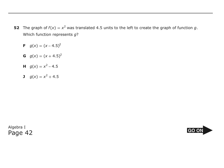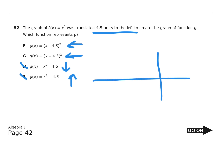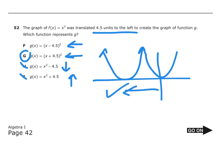Number 52: The graph of f(x) equals x squared was translated 4.5 units to the left. Options H and J involve vertical shifts, not horizontal — H is 4.5 units down, J is 4.5 units up — so those are incorrect. We're looking for 4.5 units to the left. Graphing option F — x minus 4.5 squared — actually moves to the right. Graphing G, which is x plus 4.5 squared, confirms it was translated 4.5 units to the left. That is the correct answer.